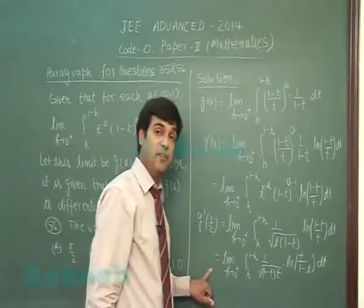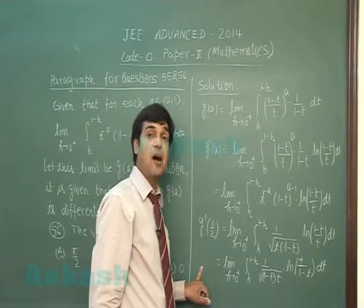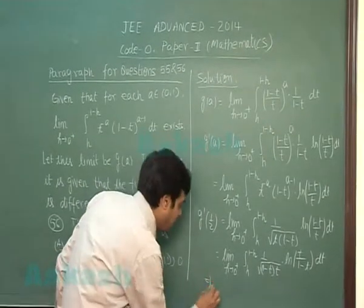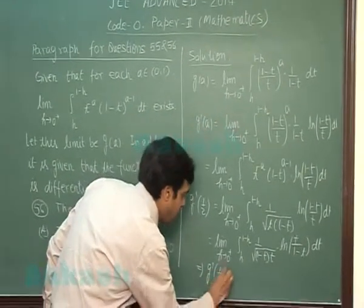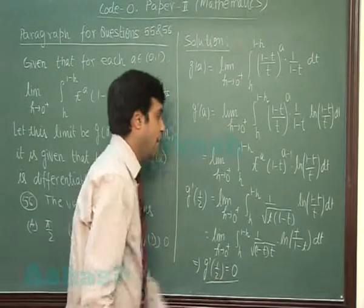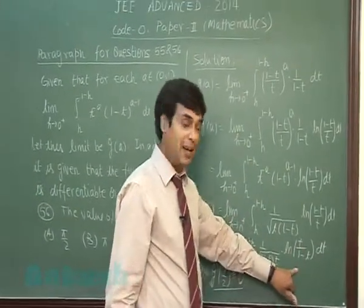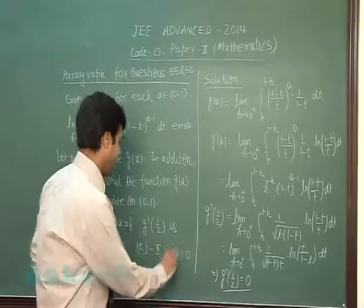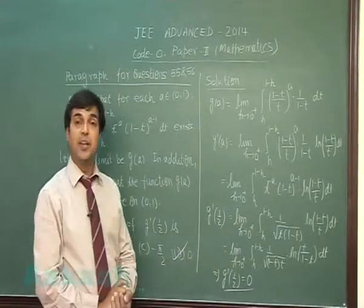Now when we add these two results, we simply find twice of g'(1/2) equals 0, giving me g'(1/2) equals 0 because of these two terms. So the correct answer for this one is (d). Let's move to the next one.